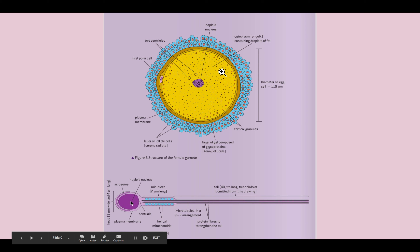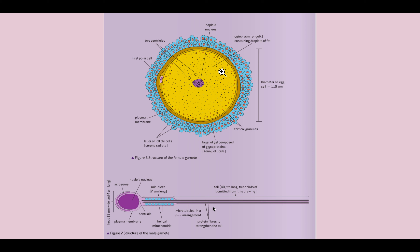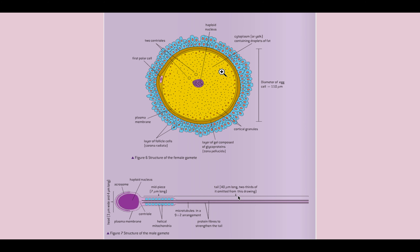The sperm has three parts: head, neck, and tail. The nucleus is entirely in the head. On the neck there are many mitochondria, which produce ATP to power swimming of the tail. The tail is made of microtubules that produce movement, very similar in structure to a flagellum.